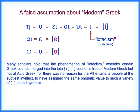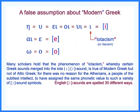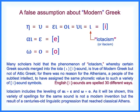There is a false assumption about modern Greek. Many scholars hold that the phenomenon of ioticism—whereby certain Greek sounds merged into the iota-E sound—is true of modern Greek but not of Attic Greek, arguing there was no reason for the Athenians to have assigned the same phonetic value to such a variety of E-sound symbols. Ioticism includes the leveling of alpha-iota and epsilon, and omega and omicron. As will be shown, this variety of spellings for the same sound is not a modern invention but the result of a centuries-old linguistic progression that reached classical Athens.